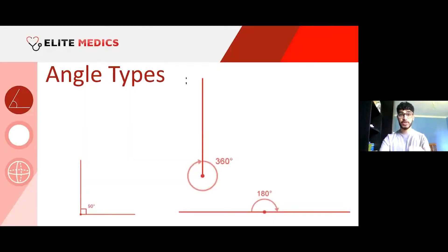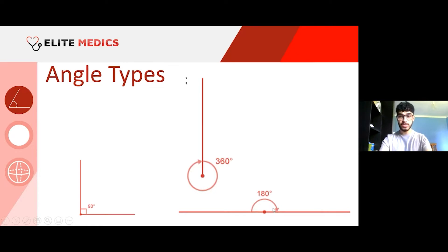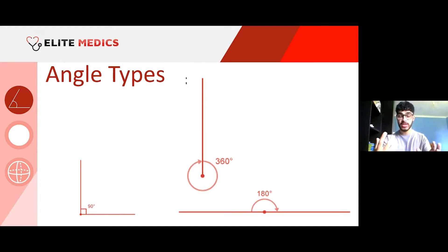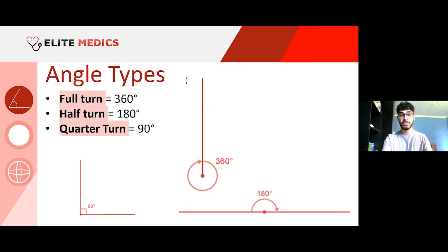I'm going to explain some angle types. The three most basic angles: we have a 90-degree right angle, we have 360 degrees which is the full revolution of a circle, and we have 180 degrees which is what we often call an angle on a straight line. These are sometimes labelled quarter turn, full turn, and half turn.